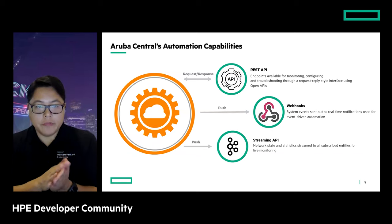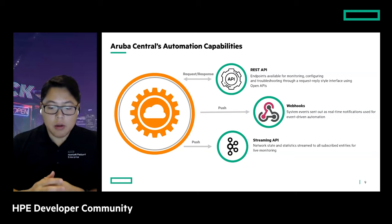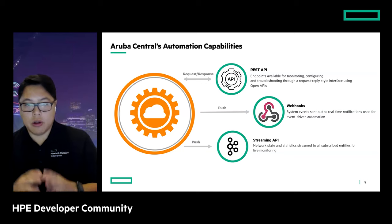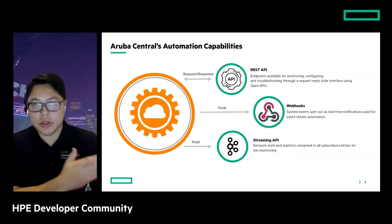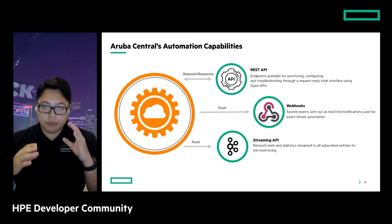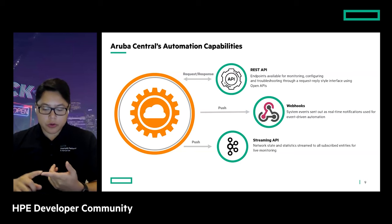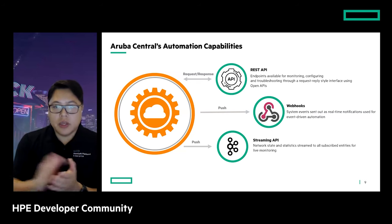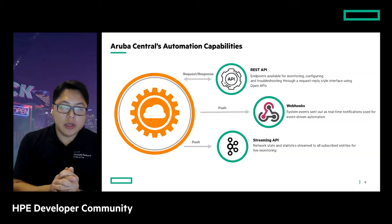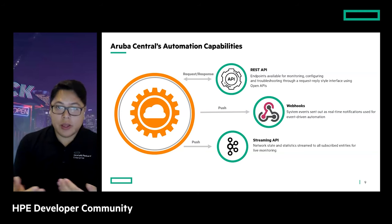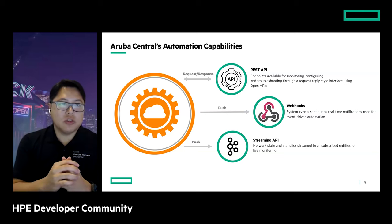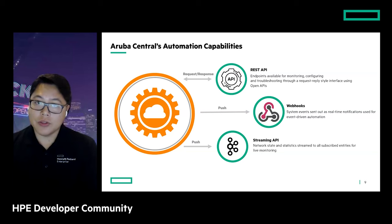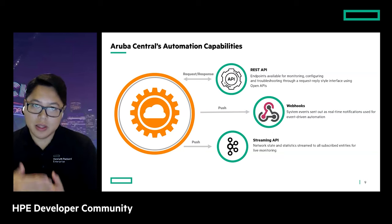With Central, you can also make use of streaming APIs — another push type model, more of a publish-and-subscribe model where you can stream data based on network state and statistics. A lot of customers use it for their own custom dashboards and in-house tools. We have topics available around monitoring, audit, location, presence, security, and app RF. If you've seen our demonstrations at Atmosphere and Discover, we often utilize customized dashboards that make use of these streaming APIs.